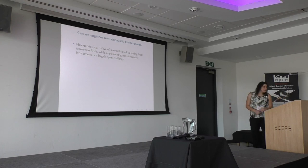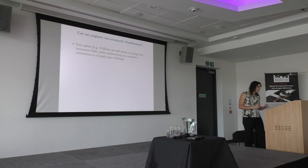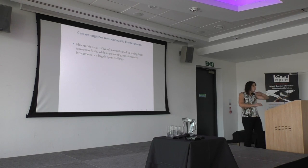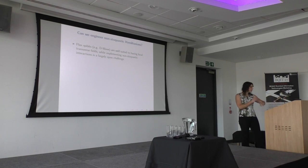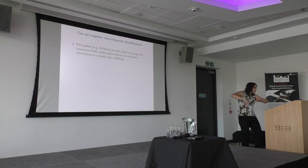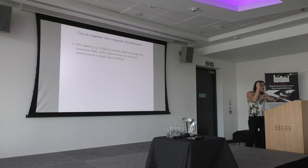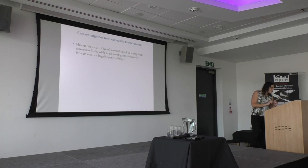Can we engineer non-stoquastic Hamiltonians? Flux qubits are especially well suited to having local transverse fields — one-local magnetic fields. But implementing non-stoquastic interactions, or anything more general, is very hard. You have nice controllable interactions in the Z basis, but in the complementary X basis it becomes very hard to do anything beyond one-local fields. Even making some local fields positive and others negative wouldn't really create a sign problem because you could just do a local change of basis switching up and down. To have an intrinsic, inescapable sign problem, you need to go beyond these one-local field terms.